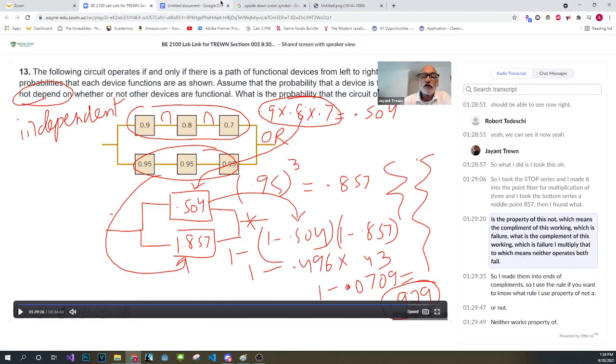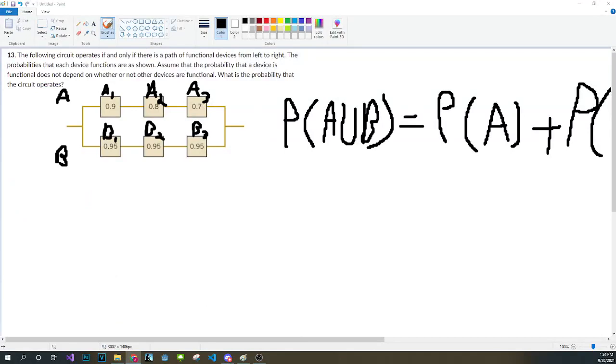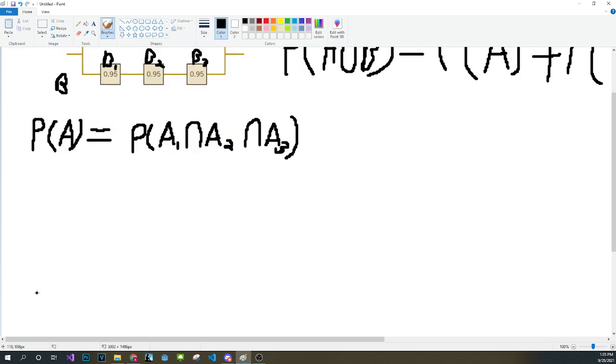So right now let's look at what the book says. A series circuit tells you that if one of these doesn't work, then the whole line does not work. That means that the probability of A working is contingent on the probability of A1 intersect A2 intersect A3, and so on. This also means for B. So the probability of B is B1 intersecting with B2 intersecting with B3.